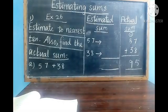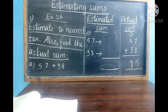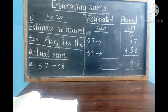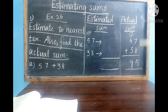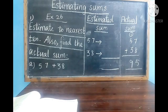Next we are going to learn how to estimate sums. In our ordinary method, we find the sum of two numbers the same way — we find the actual sum. To find the estimated sum, we round off the number 57 to nearest 10 and round off the number 38 to nearest 10, then find the sum.